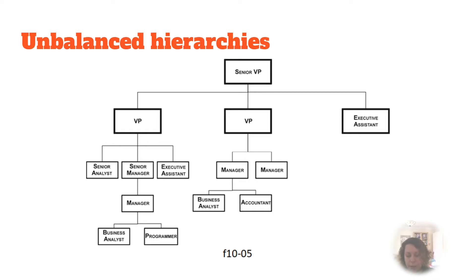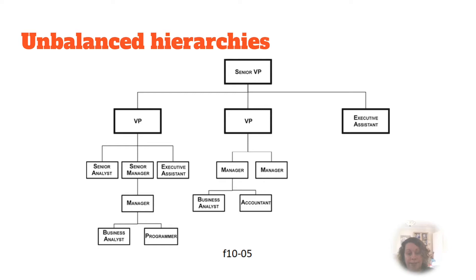The structure is unbalanced, with some branches in the hierarchy having more levels than others. The number of employees at each level varies, and employee titles are not uniform across a level. But there is always a parent-child relationship until the branch encounters the leaves of business analysts and programmers.